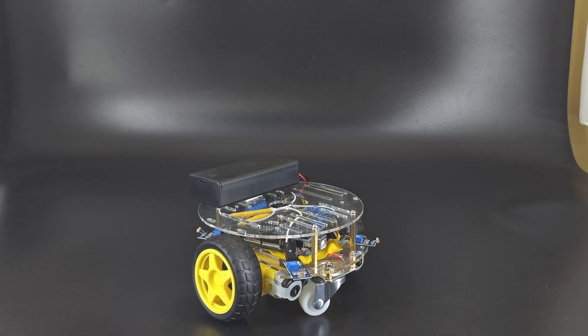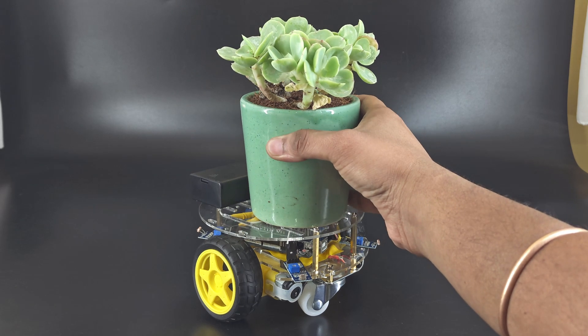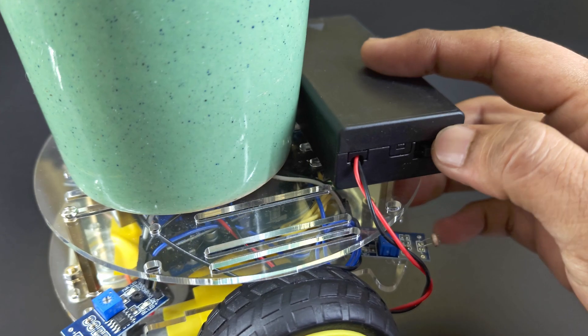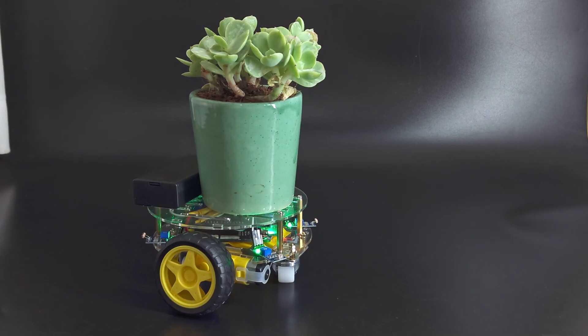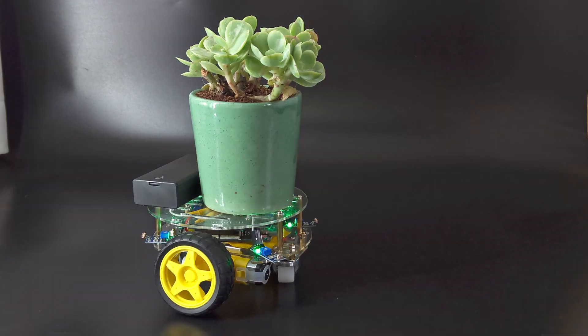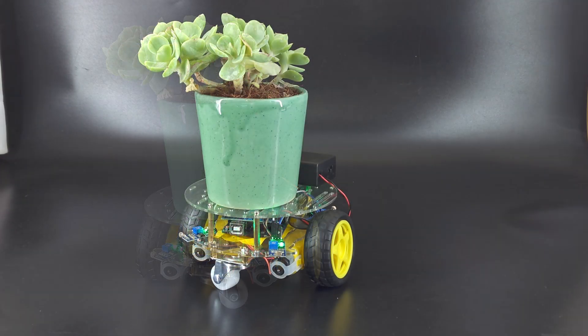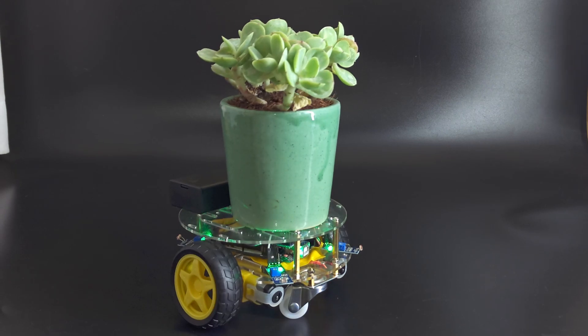Put our plant in place and turn the power on. Now our smart plant should turn in the direction of the light. This can be very useful if you have plants that need a lot of sunlight.